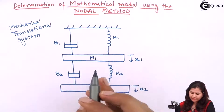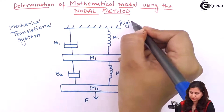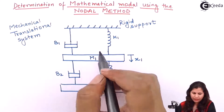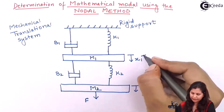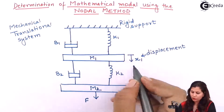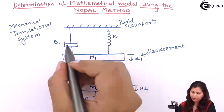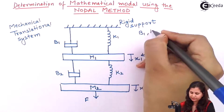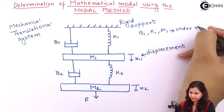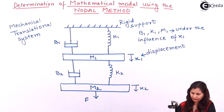In this system we have B1, K1, and M1 attached to this rigid support. This is a rigid support, and B1, K1, and M1 are all under the influence of this displacement X1. Because they are connected to this rigid support, this displacement X1 will influence these three elements: damper, mass, and the spring.